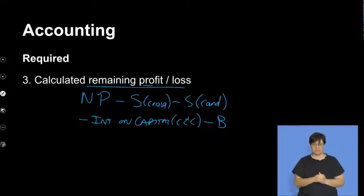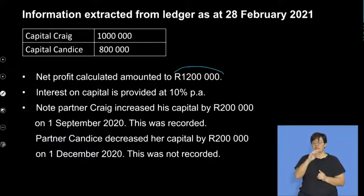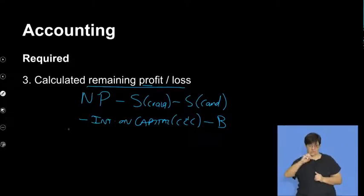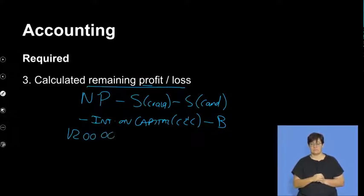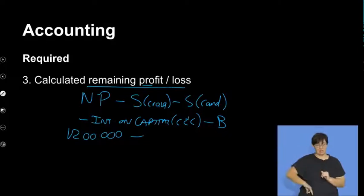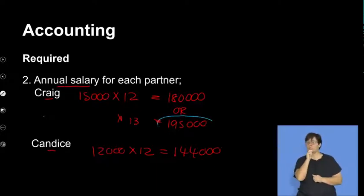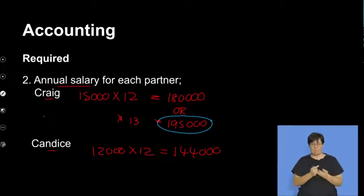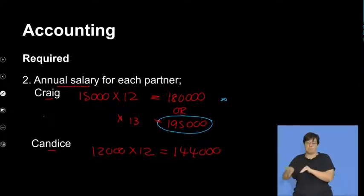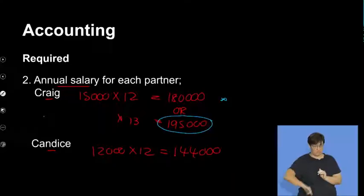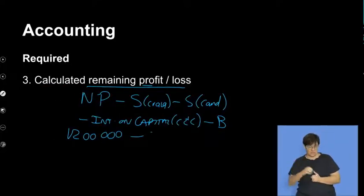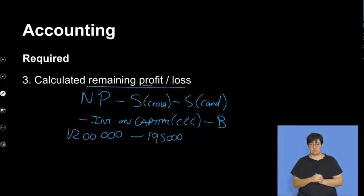Let's do that calculation. The net profit amounted to 1,200,000, so I'm starting with that: 1,200,000. Minus the salary for Craig — I'm going to use 195,000, so I don't have to show the bonus separately. But remember, if you show the bonus separately, you've got to include that in your calculation of remaining profit. So minus 195,000, including that bonus.